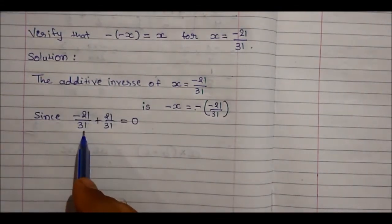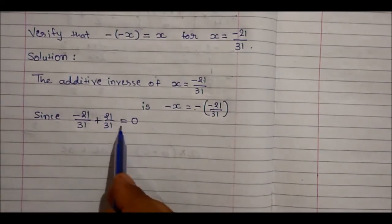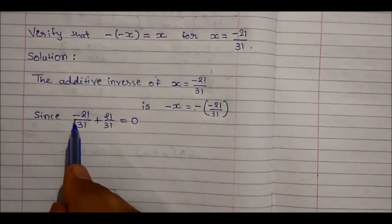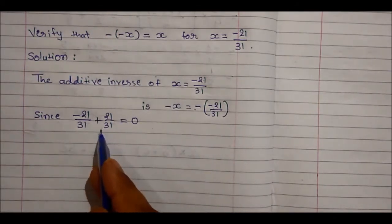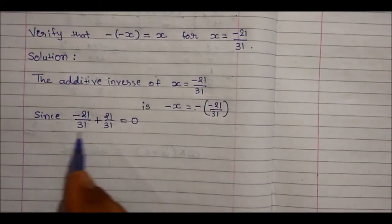Yes, minus 21 upon 31 plus 21 upon 31 we are getting 0 because minus 21 plus 21 is 0 and 0 upon any number becomes 0. So this quantity is 0.